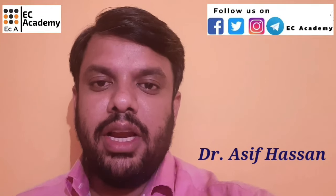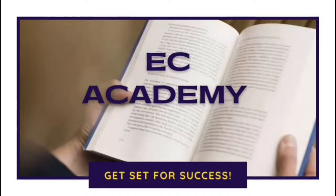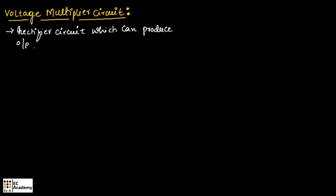Hello friends, welcome to ESA Academy. In this lecture, let us understand voltage multiplier circuit. Voltage multiplier circuit is the rectifier circuit — specifically a diode rectifier circuit — which can produce output voltage larger than the applied input voltage.